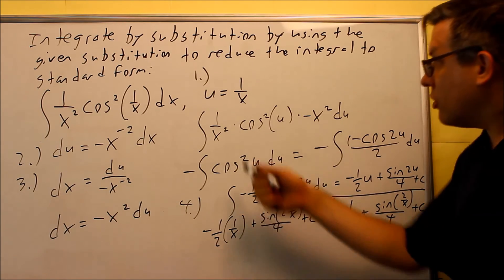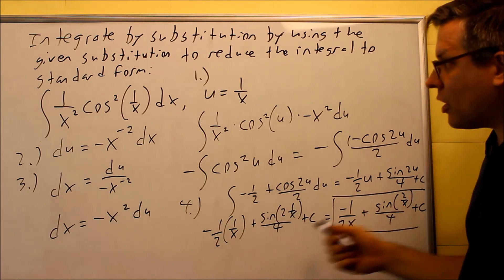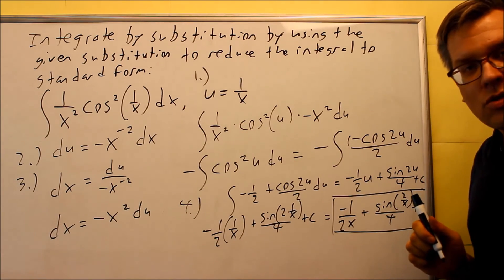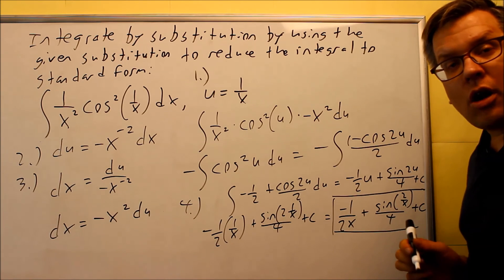So we multiplied. Again, we put the u. The u is 1 over x. You always want to make sure you put that back in because the original problem had x's. So you want to make sure you substitute it back in so your final answer also has x's.